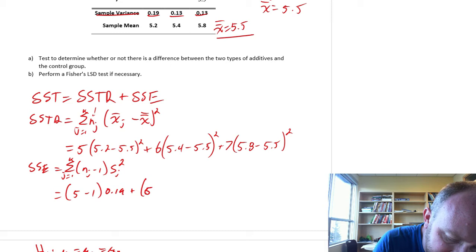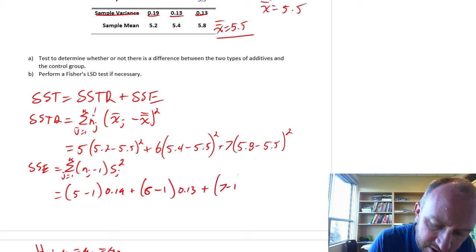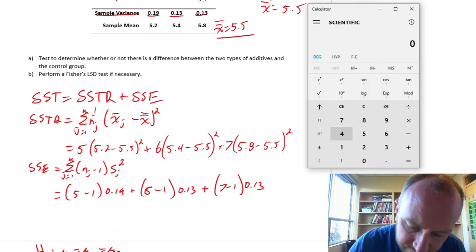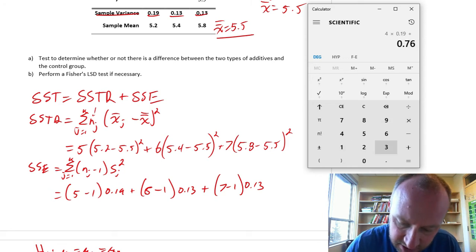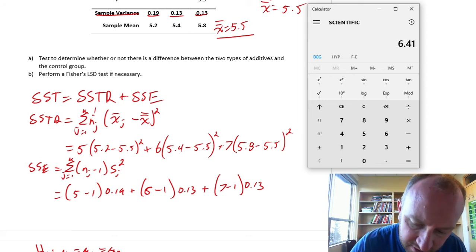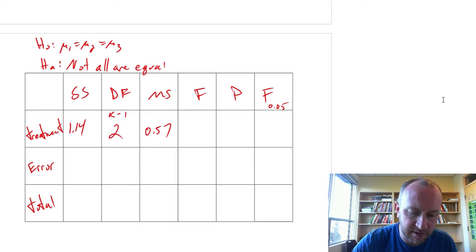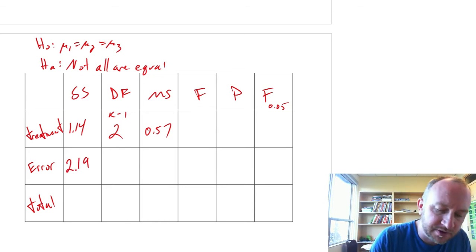So this is going to be 5 minus 1 times 0.19, 6 minus 1 times 0.13, and the last one is 7 minus 1 times 0.13. So this is 4 times 0.19 plus 5 times 0.13 plus 6 times 0.13. That's 2.19.